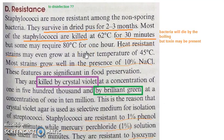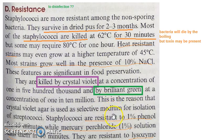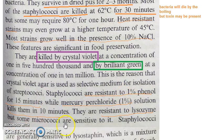These bacteria are resistant to boiling for 30 minutes — the bacteria die but the toxins remain. Even in dried pus they can survive for 2 to 3 months. They are killed by crystal violet and brilliant green, but are resistant to 1% phenol for 15 minutes, showing extreme resistance even to disinfectants.